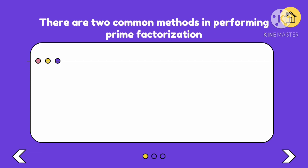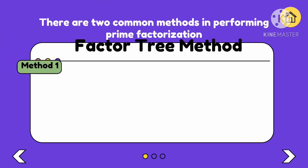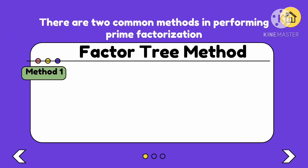There are 2 common methods in performing prime factorization. The method we performed earlier is called the factor tree method. Why is it called factor tree? Because it looks like a tree of factors.